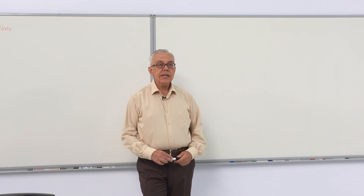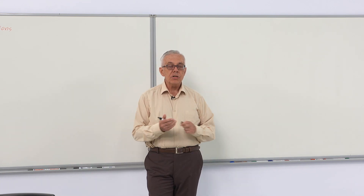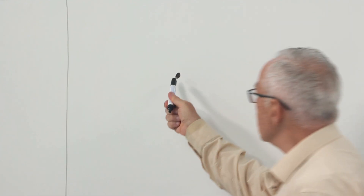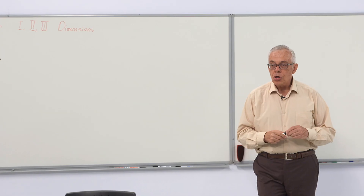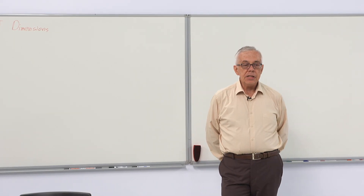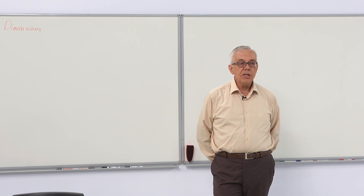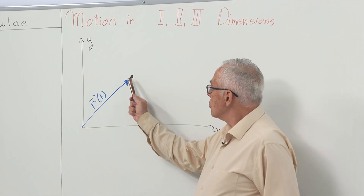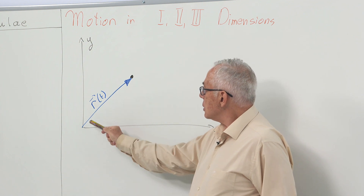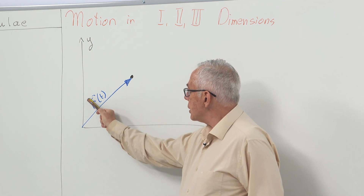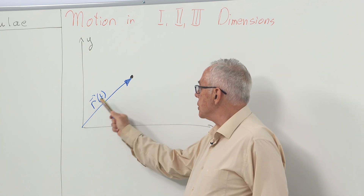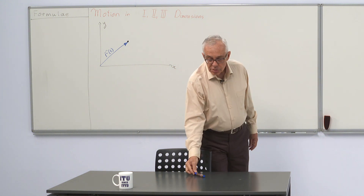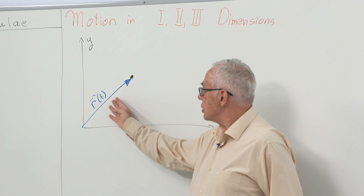The motion we are going to investigate is the motion of a single particle. Motion is the change in position, so we need coordinates to define this motion. The particle's current position is given by the vector r, which denotes where it is in these coordinates. Since we are talking about motion, this r is changing in time.